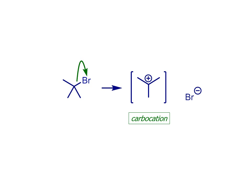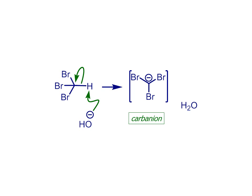Before we leave carbocations, we should note their place amongst other carbon-centred reactive intermediates. An alkyl halide can lose bromide to leave the positively charged carbon centre of a carbocation, which has six valence electrons around the central trivalent carbon atom. In contrast, if a suitably acidic proton H+ is removed from a carbon atom, a negative charge is left behind, giving rise to a species we call a carbanion. It's also trivalent, but has eight valence electrons at carbon and is negatively charged.